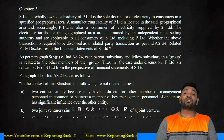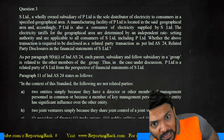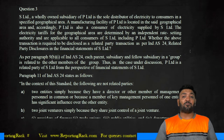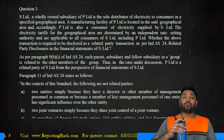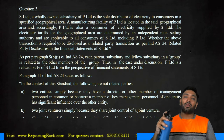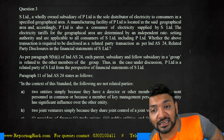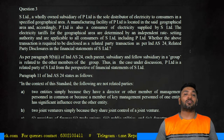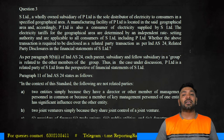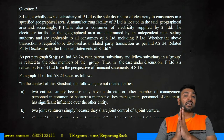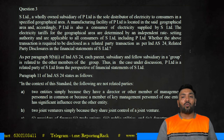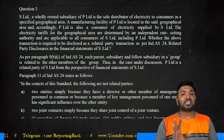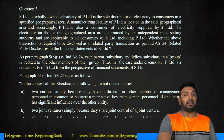In the last question: S, the only subsidiary of P, is the sole distributor of electricity to customers in a specified geographical location. P Limited's manufacturing facility is located in the same geographical area and accordingly P Limited is a consumer of electricity supplied by S. The tariffs are determined by an independent rate-setting authority and are applicable to all customers including P. This transaction is still required to be disclosed as a related party transaction, since S Limited is the wholly owned subsidiary of P.